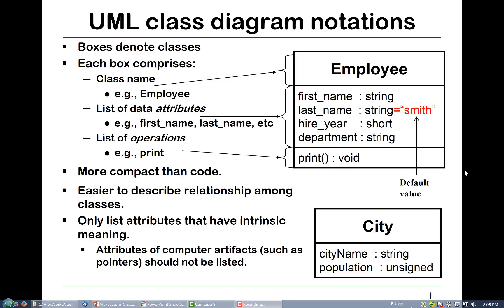In UML, a class is represented in three boxes. The first is the class name, the second is the list of attributes, and the third is the list of operations.